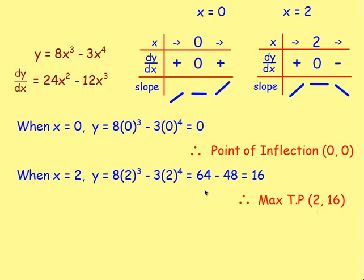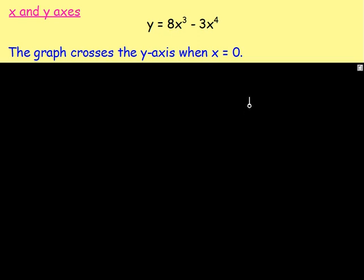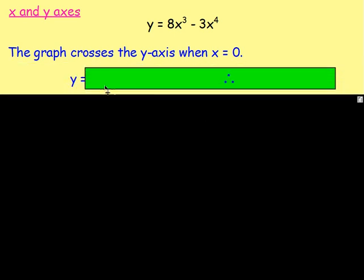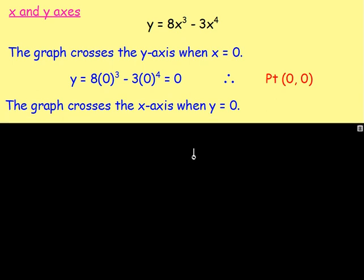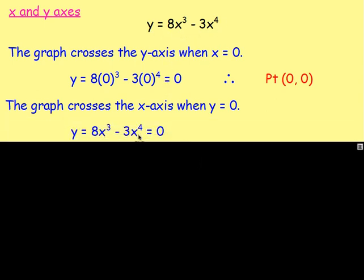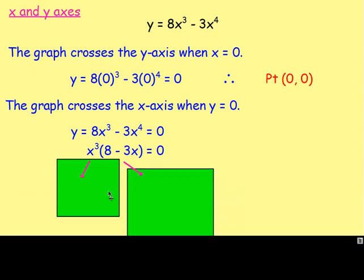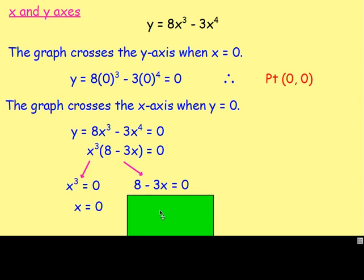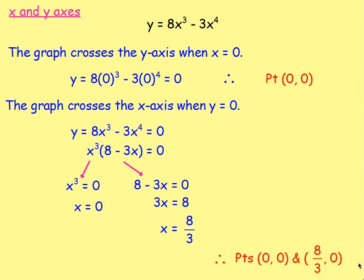Now find where it crosses the axes. For the y-axis, set x equals 0: you get the point (0, 0). For the x-axis, set y equals 0: 8x cubed minus 3x to the 4 equals 0. Factorize: x cubed bracket (8 minus 3x) equals 0. Either x cubed equals 0 giving x equals 0, or 8 minus 3x equals 0 giving x equals 8 over 3 (2 and 2 thirds). This gives the points (0, 0) and (8/3, 0).